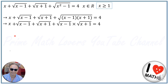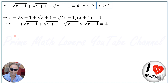For the next step, I add negative 1 to both sides of the equation, so it will be X minus 1 plus radical X minus 1 plus radical X plus 1 plus radical X minus 1 times radical X plus 1, equal to 4 minus 1.